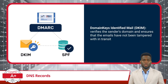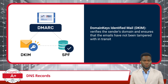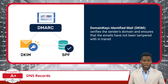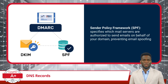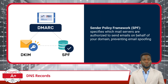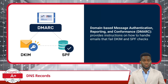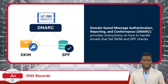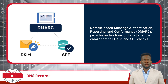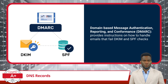In the context of spam management, three significant TXT records come into play: DKIM, SPF, and DMARC. DKIM, or Domain Keys Identified Mail, verifies the sender's domain and ensures that emails have not been tampered with in transit. SPF, or Sender Policy Framework, specifies which mail servers are authorized to send emails on behalf of your domain, preventing email spoofing. Lastly, DMARC, which stands for Domain-Based Message Authentication, Reporting, and Conformance, builds upon DKIM and SPF, providing instructions on how to handle emails that fail DKIM and SPF checks, thus enhancing email security and integrity.